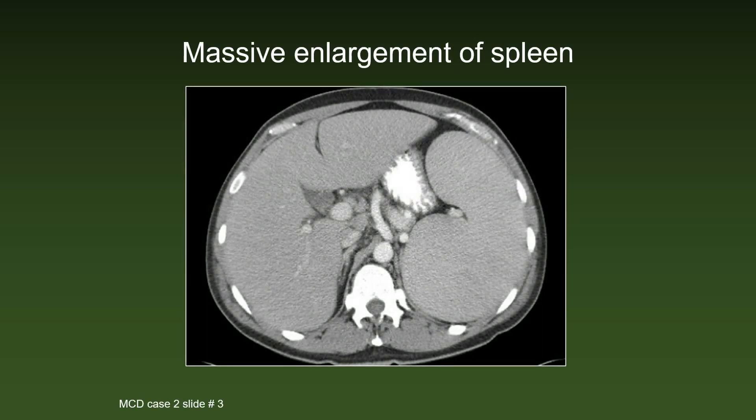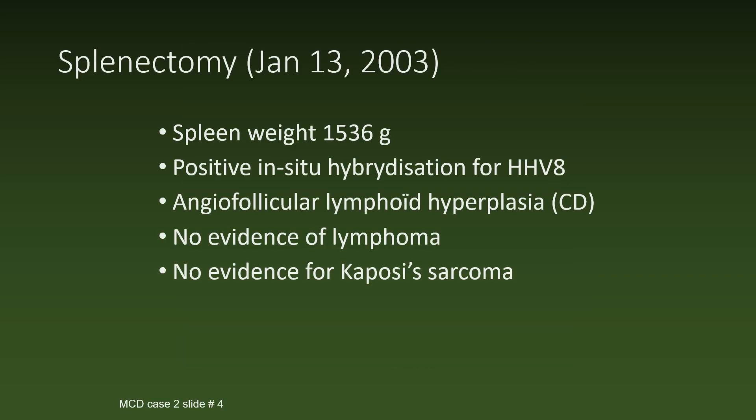In this slice from an abdominal CT scan, you appreciate the enormous enlargement of the spleen. The spleen was excised and weighed more than 1.5 kilograms. There was positive in situ hybridization for HHV-8, and histologically angiofollicular lymphoid hyperplasia compatible with Castleman's disease was found. There was no evidence of lymphoma and no evidence for Kaposi's sarcoma.